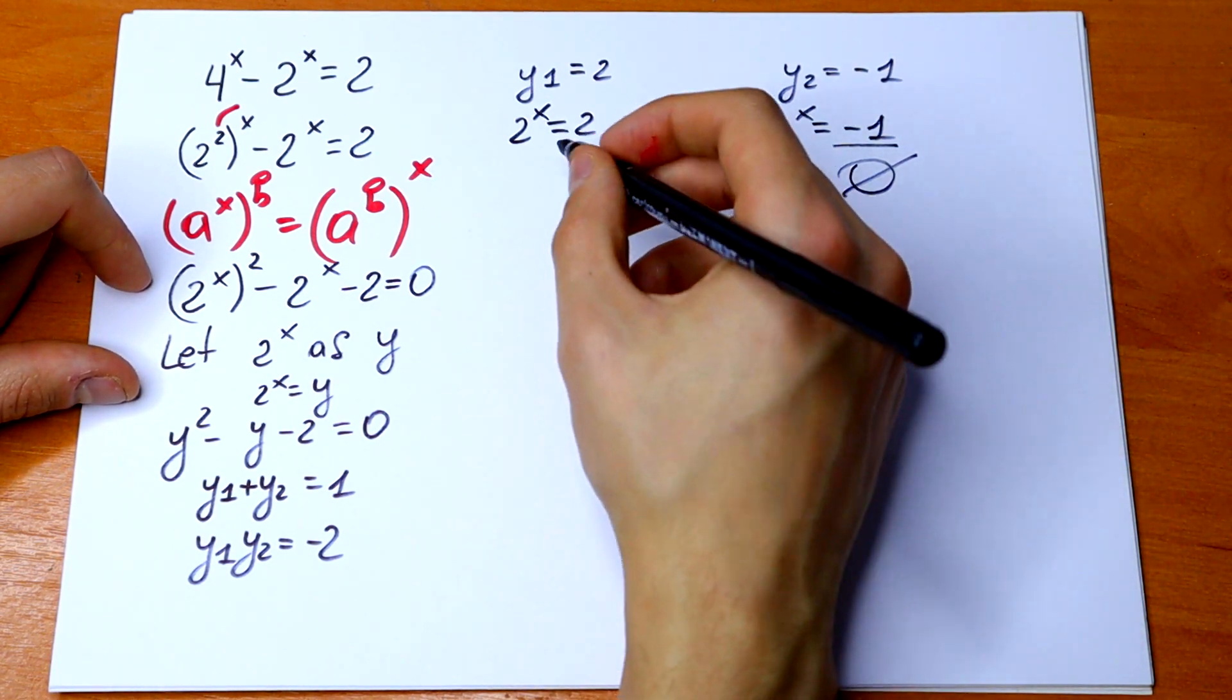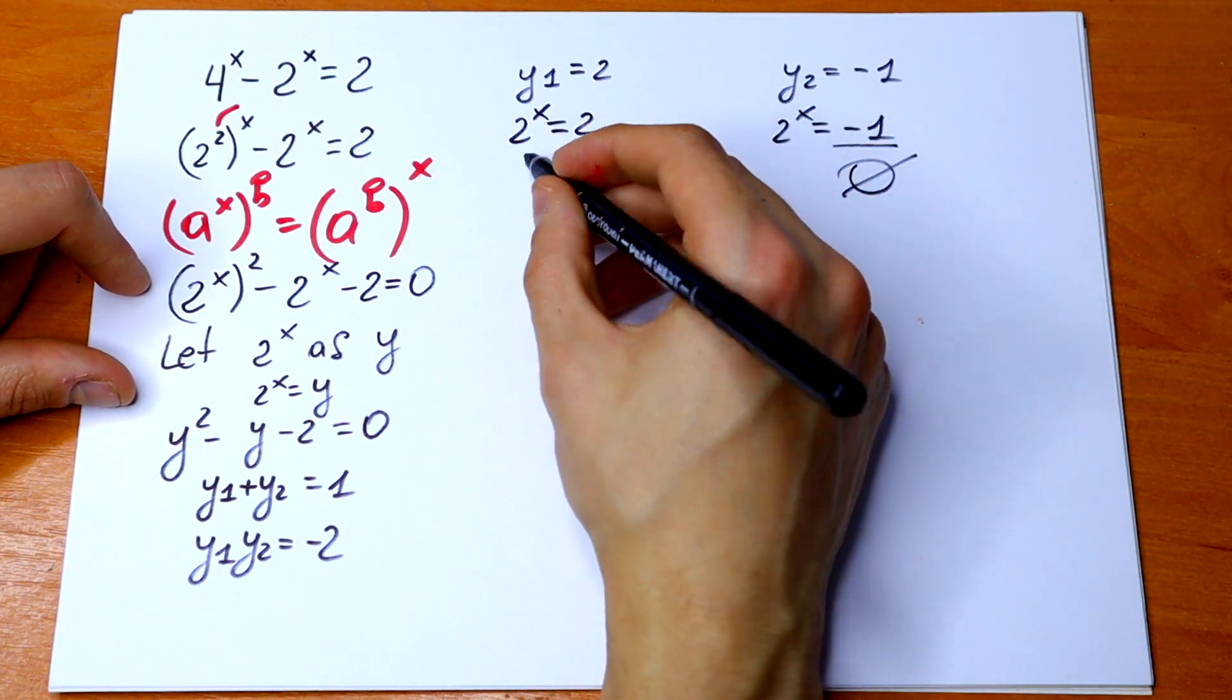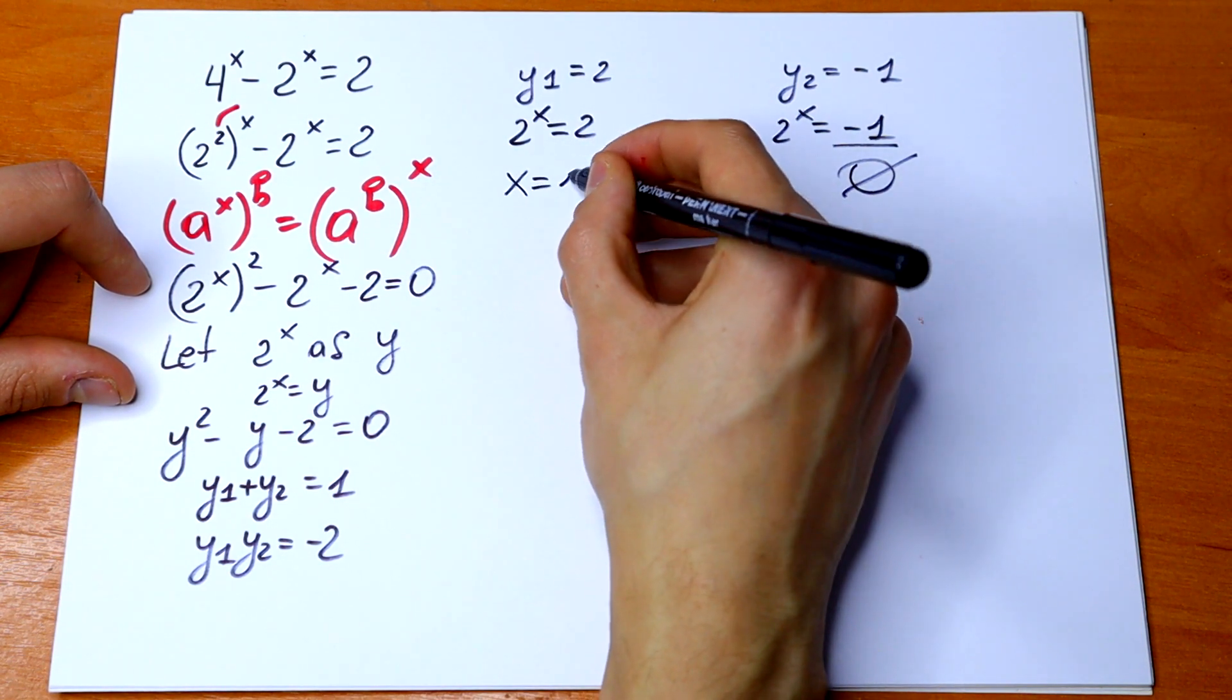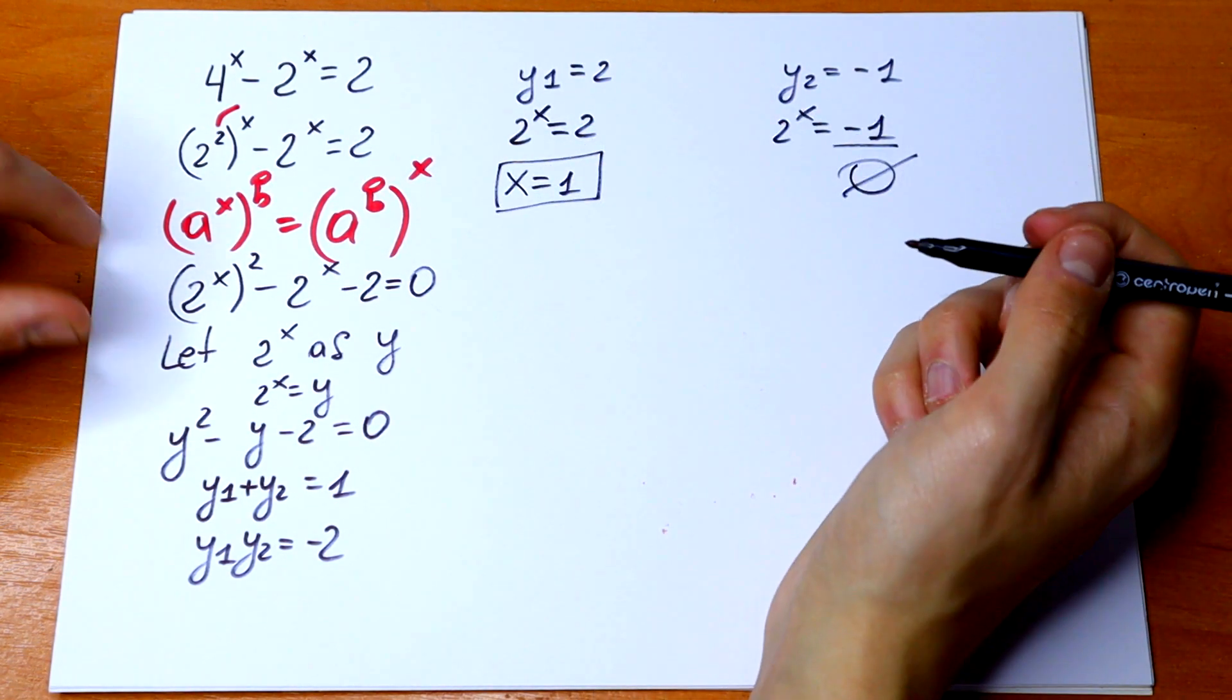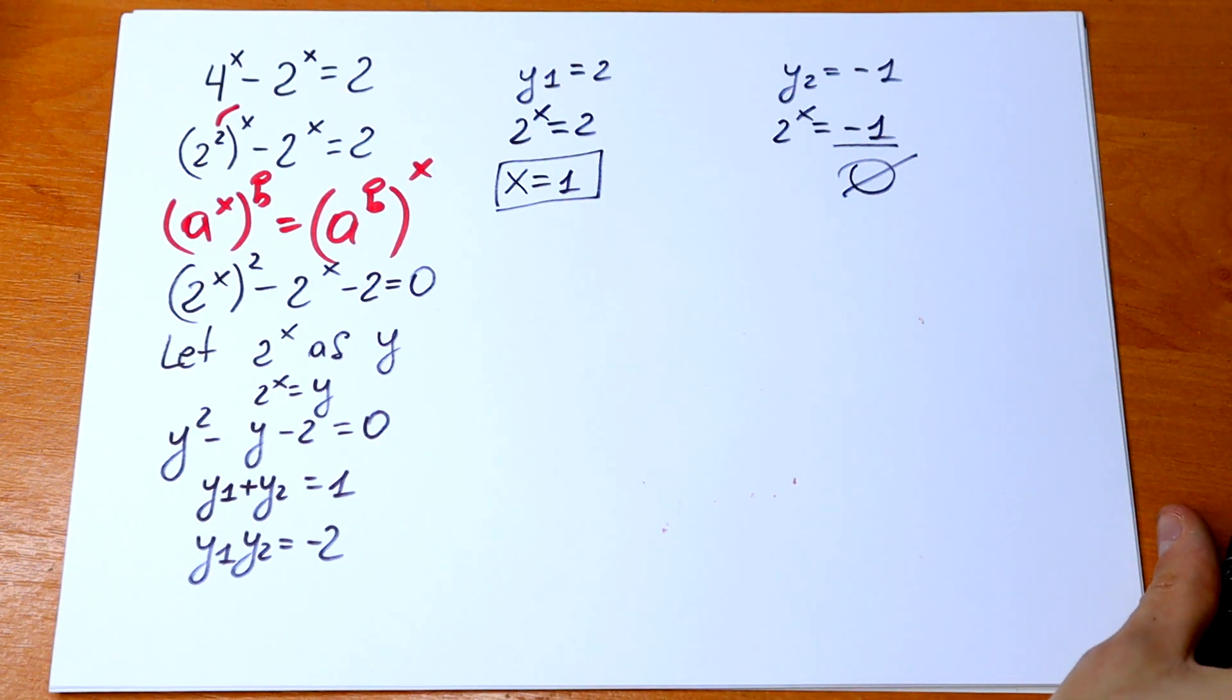We have 2^x = 2, so x = 1. This is the one and only solution to this interesting exponential equation.